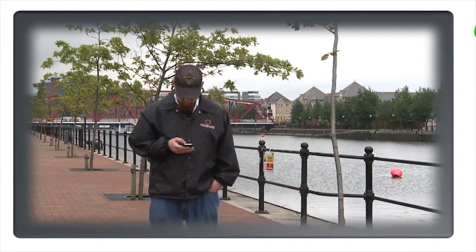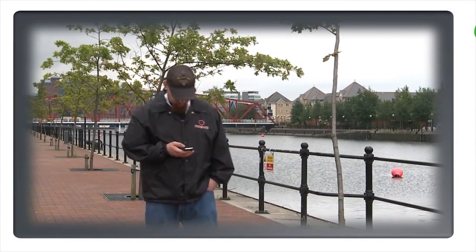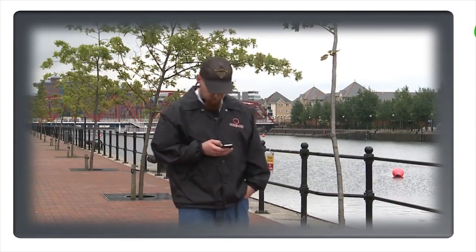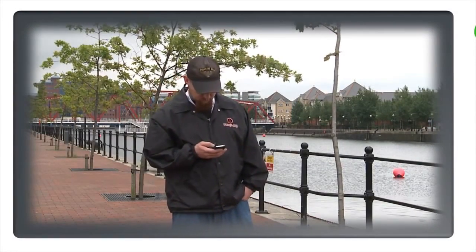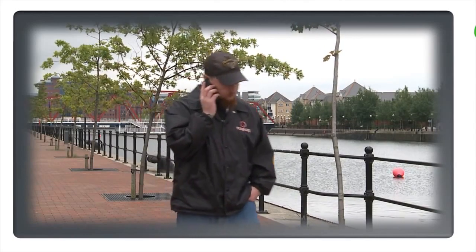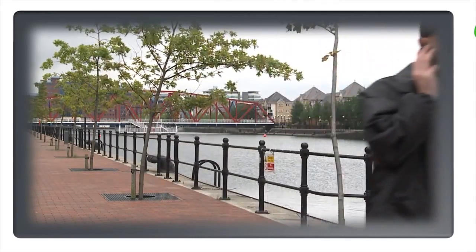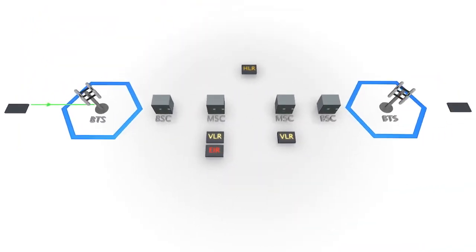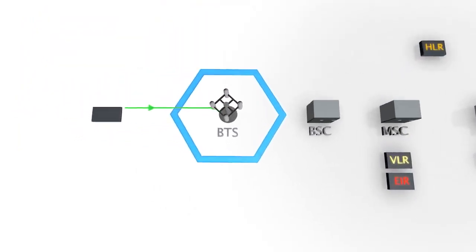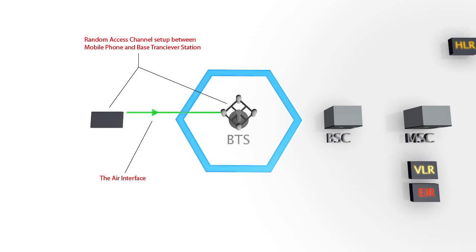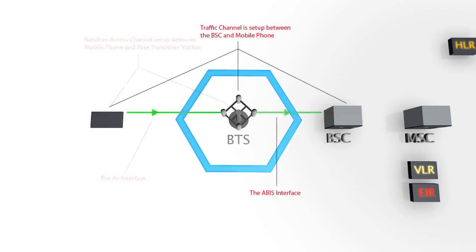Our story starts with our intrepid actor making a call to his friend. At the point he dials their number, we will follow the various processes used to connect this call. This process starts with the mobile device communicating by the air interface with the nearest BTS, and requests a random access channel to enter the cellular network.